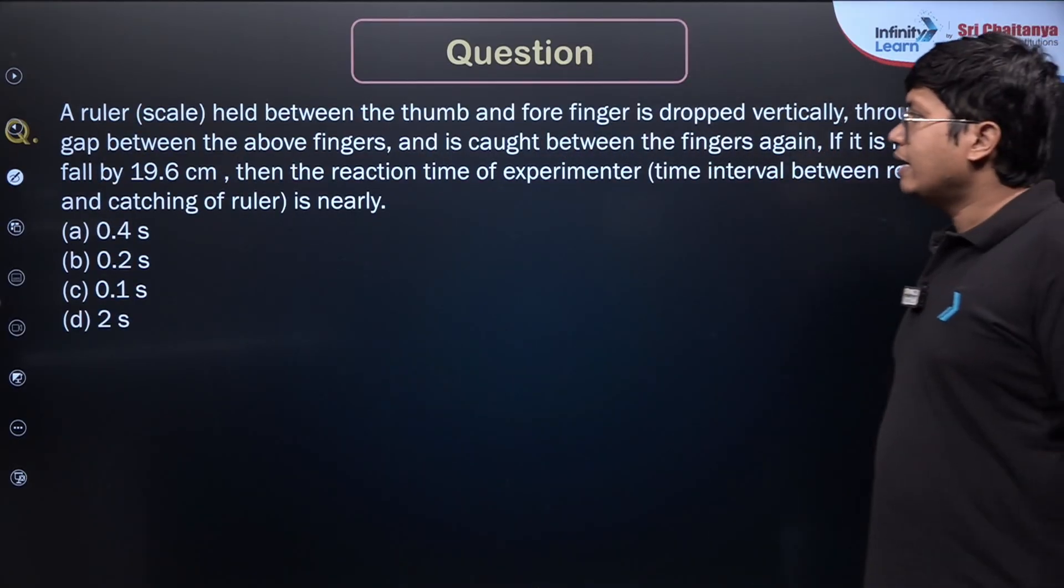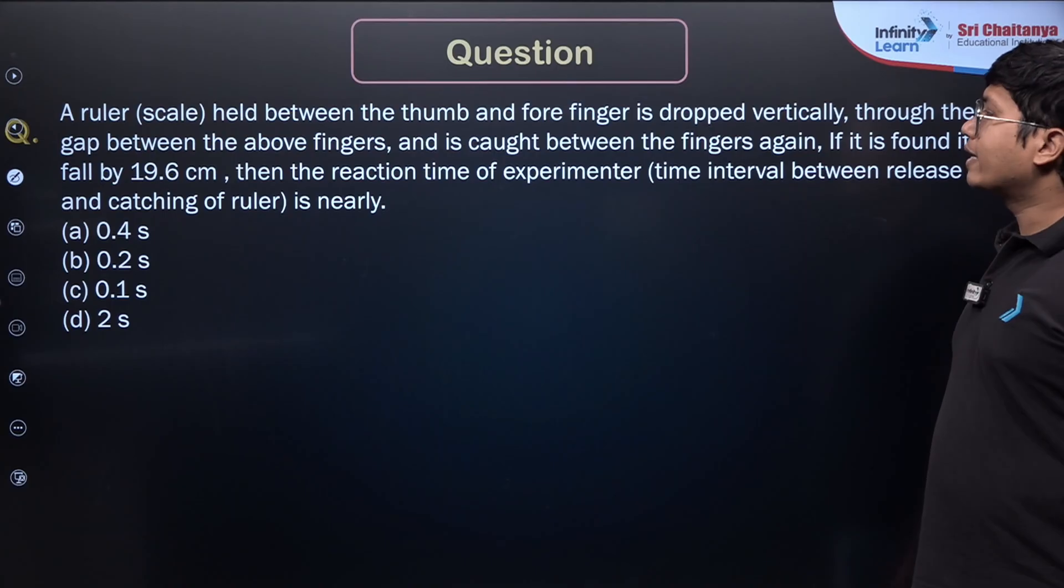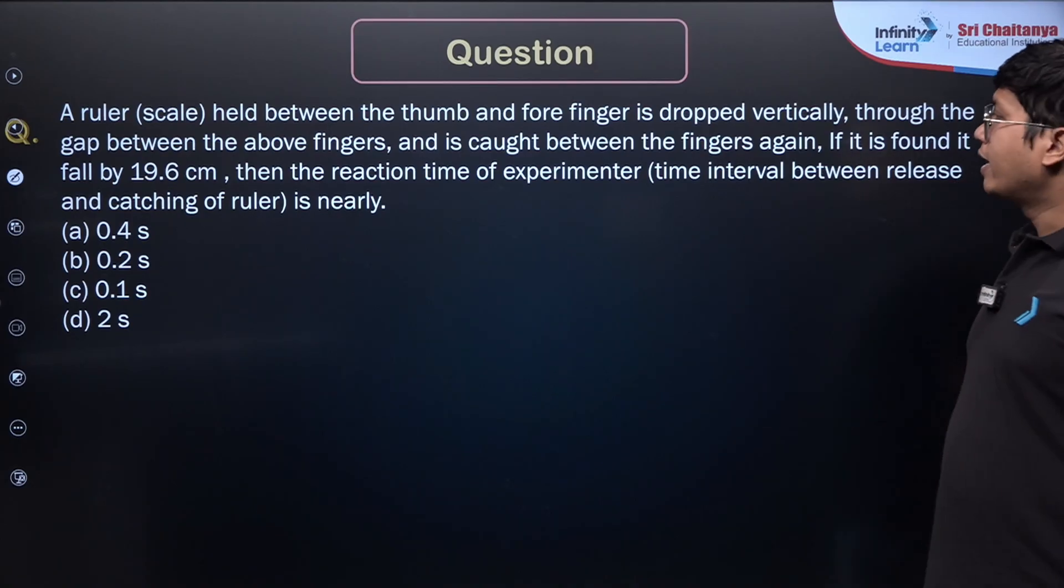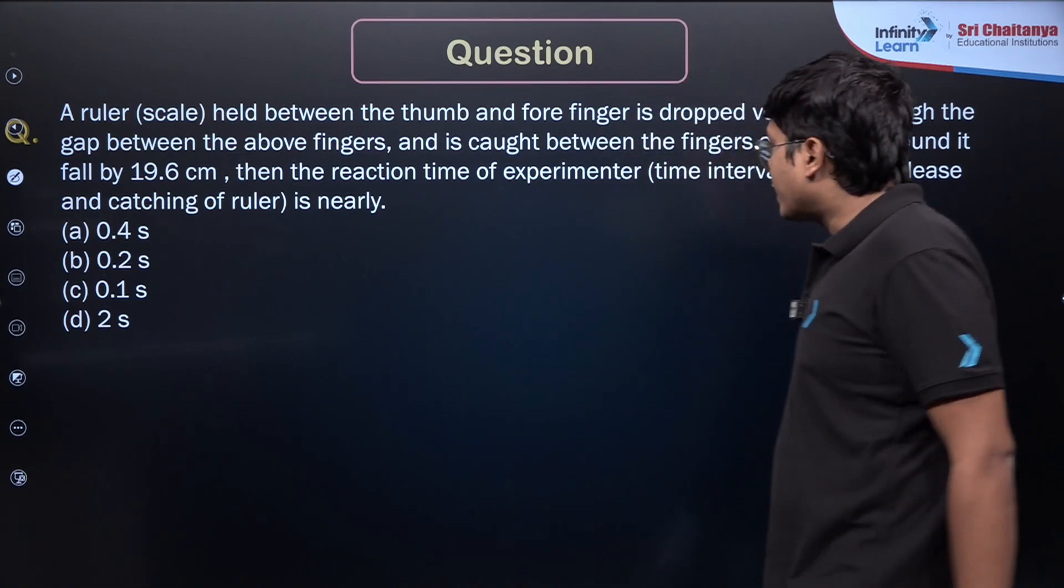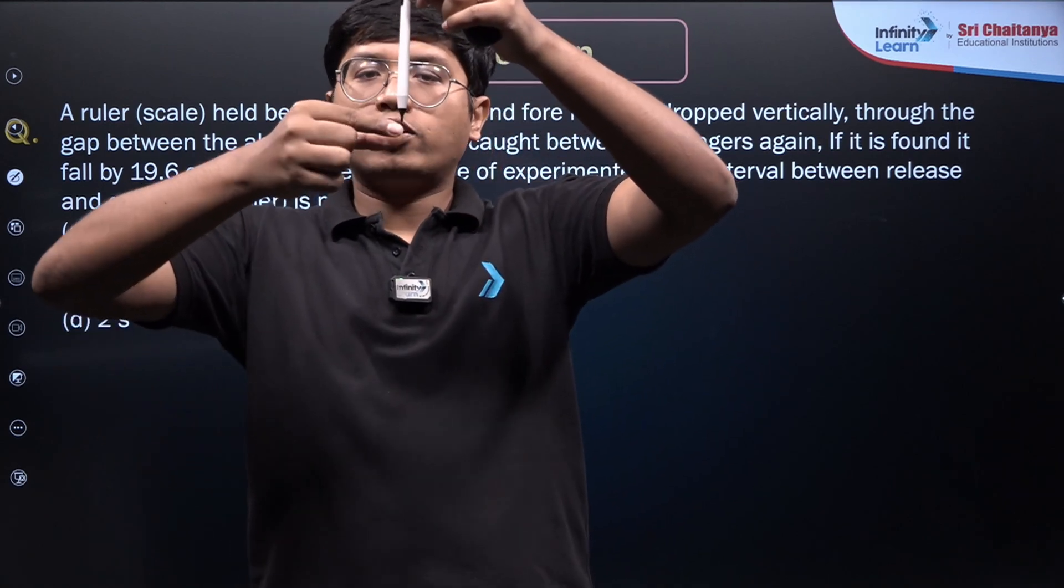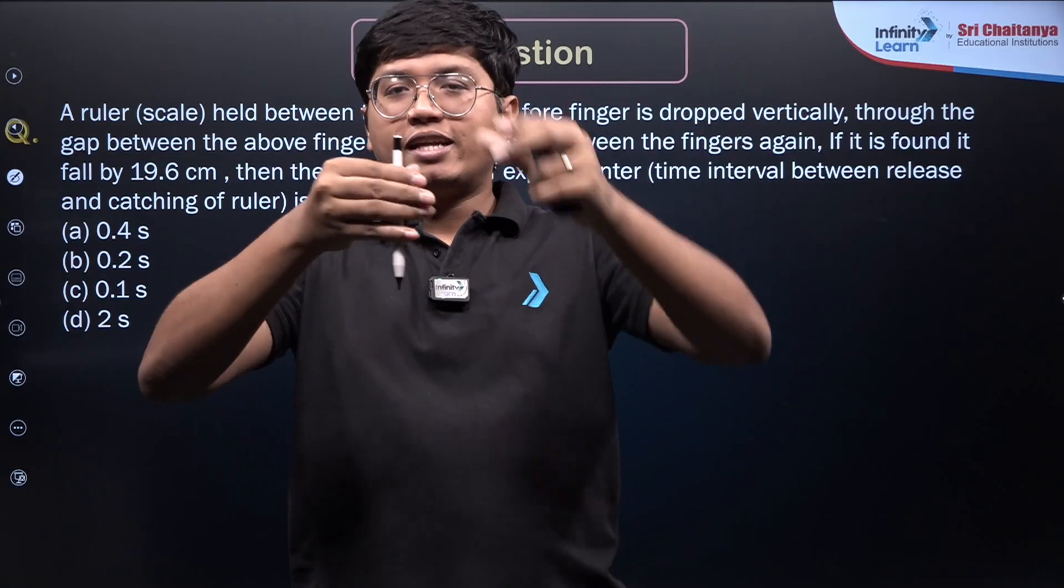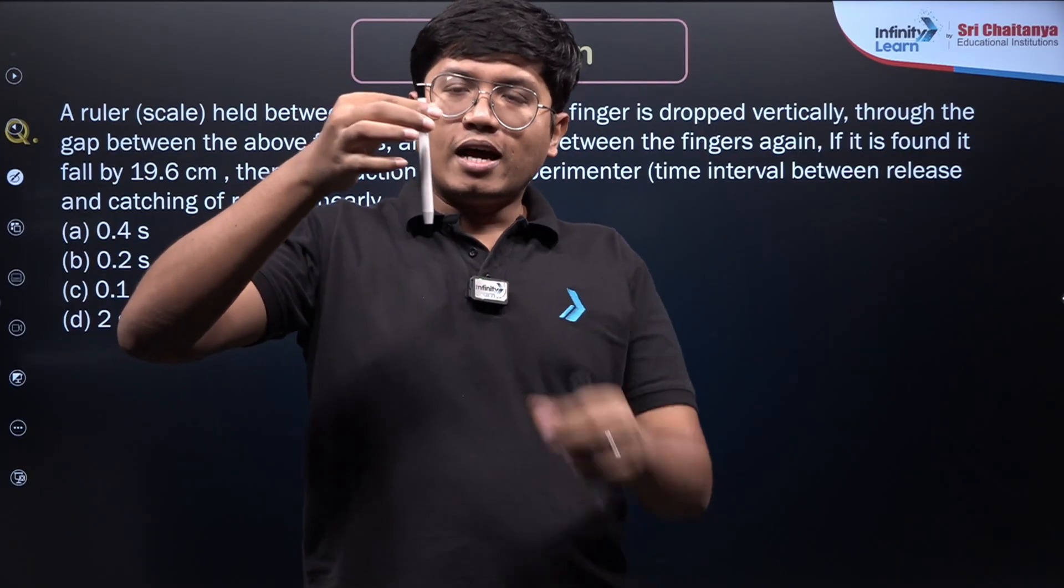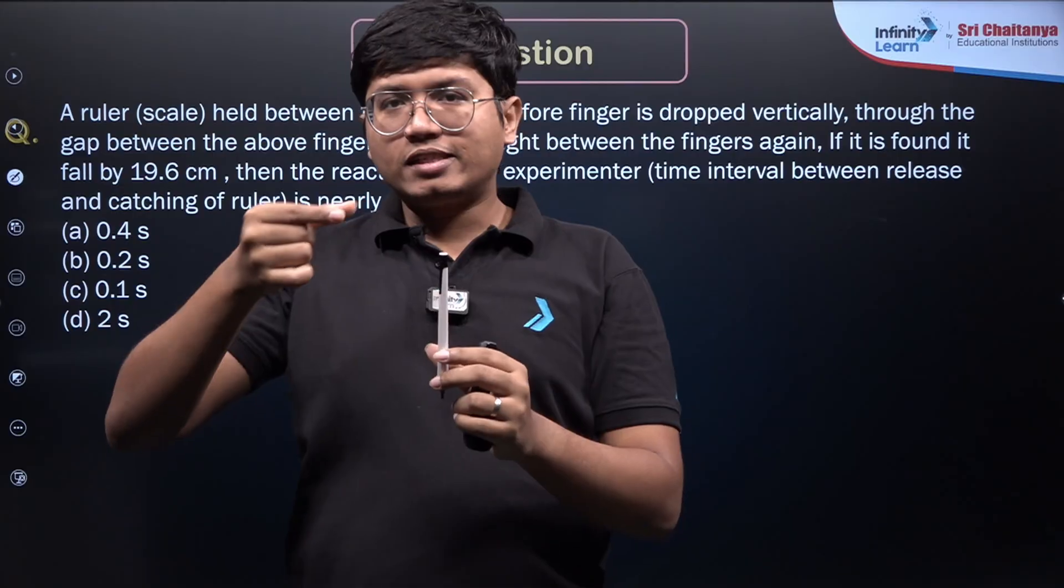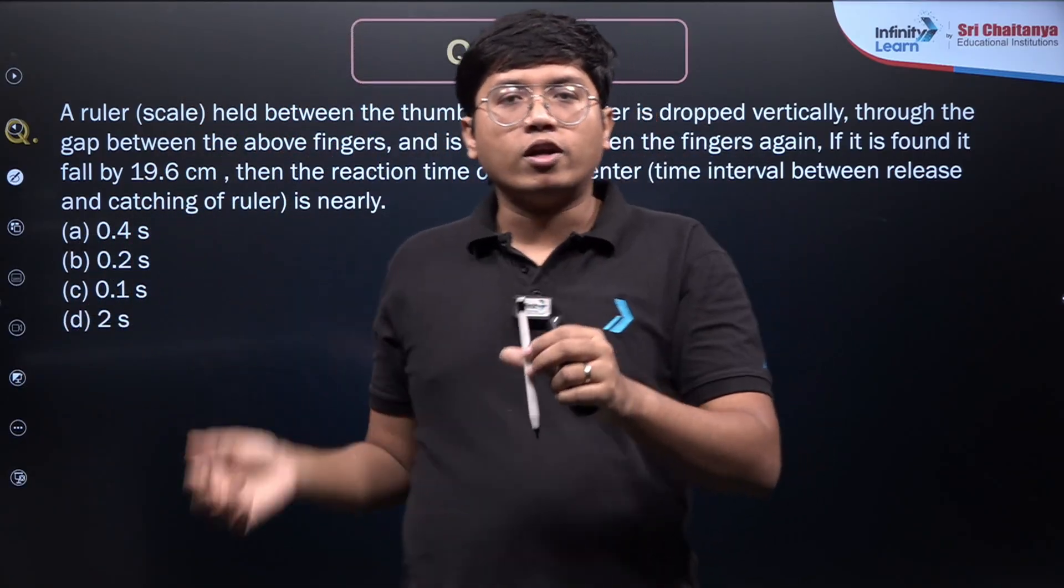You go for the next one. It is given a ruler, which is basically a scale, is held between the thumb and forefinger and is dropped vertically through the gap between the above fingers. It is caught between fingers again. If it is found it has fallen by 19.6 centimeter, then the reaction time of the experimenter is what? Meaning, suppose this is the scale over here. He is holding the tip, or his fingers are right here, just at the end. And if I release it—oops, my reaction time is too slow. But let's say he drops it and he is able to catch it over here. Then how do I get the reaction time? In that time, since it released, and in the reaction time, this moved down by 19.6 centimeter. So I just need to find, and this is a free fall, right? The scale had a free fall.